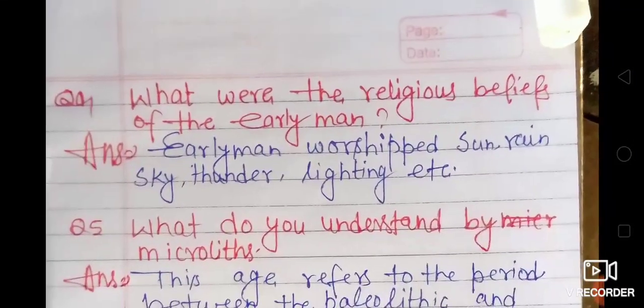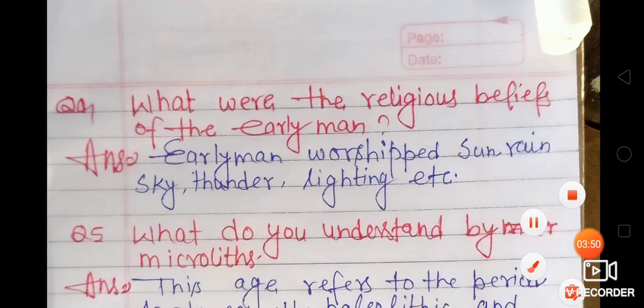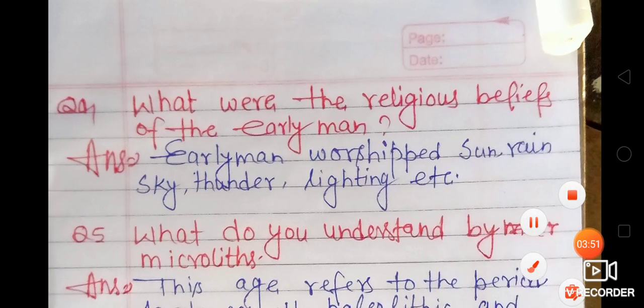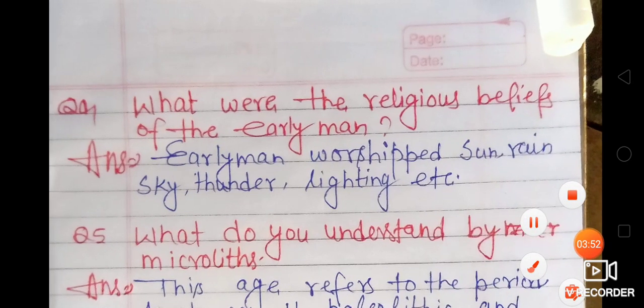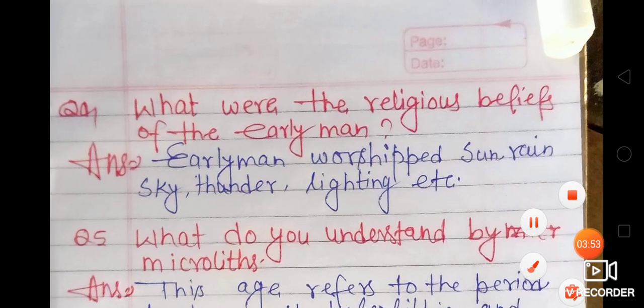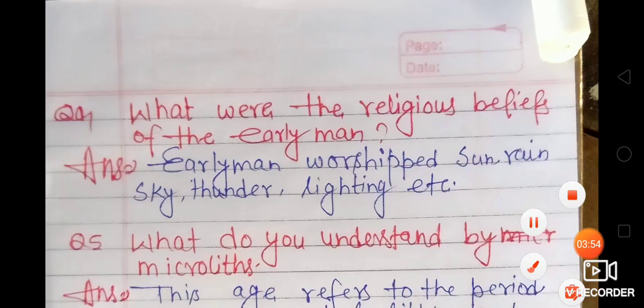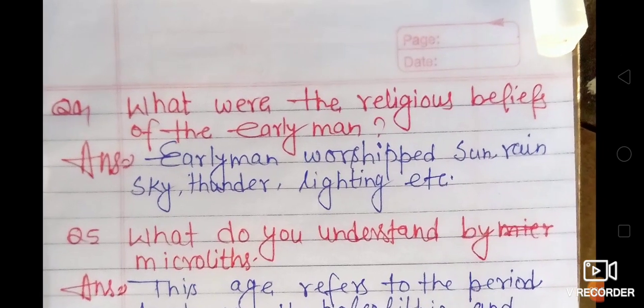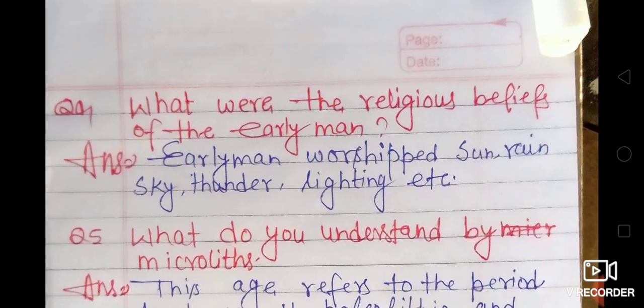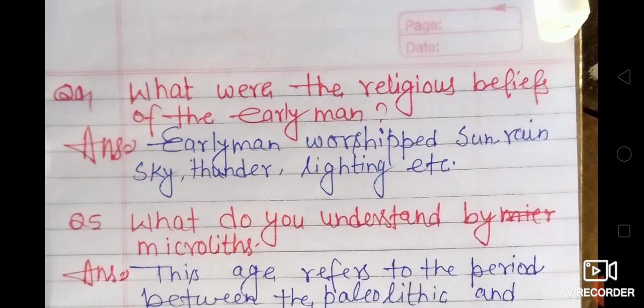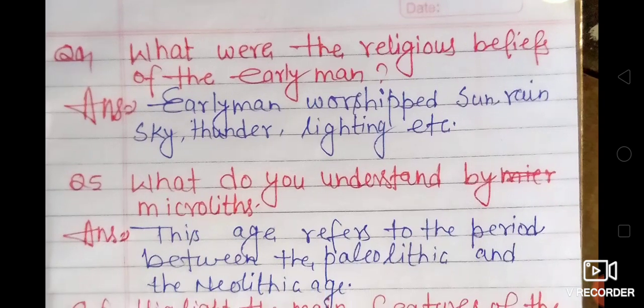Question number 6: What were the religious beliefs of the early men? Early men worshipped the sun, rain, sky, thunder, lightning, etc.